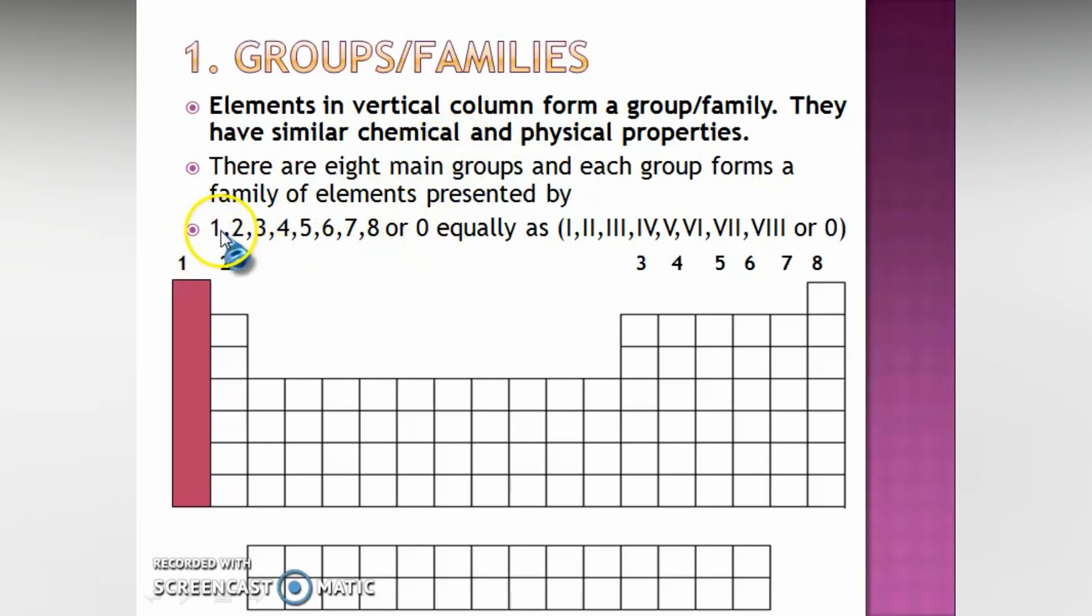Which includes group 1, group 2, down to group 8 or group 0. Now, we can equally represent them as group I which is group 1, group II which is group 2, group III which is group 3, and so on onto group VIII which is group 8 or group 0.